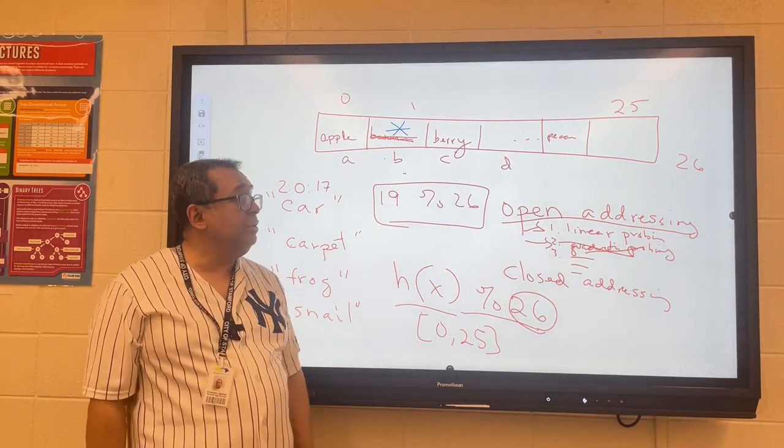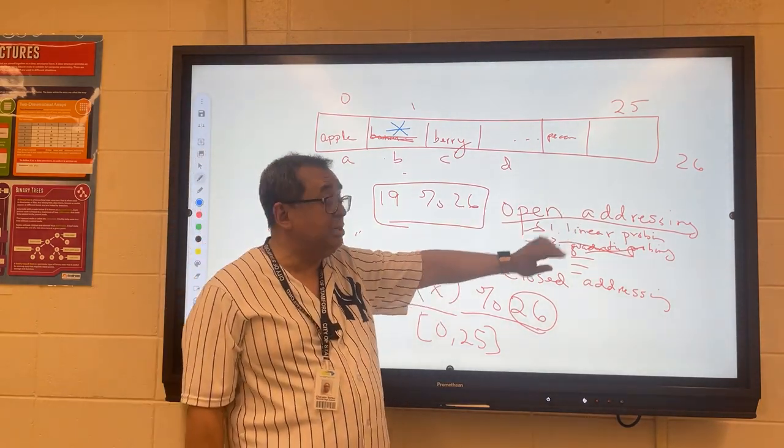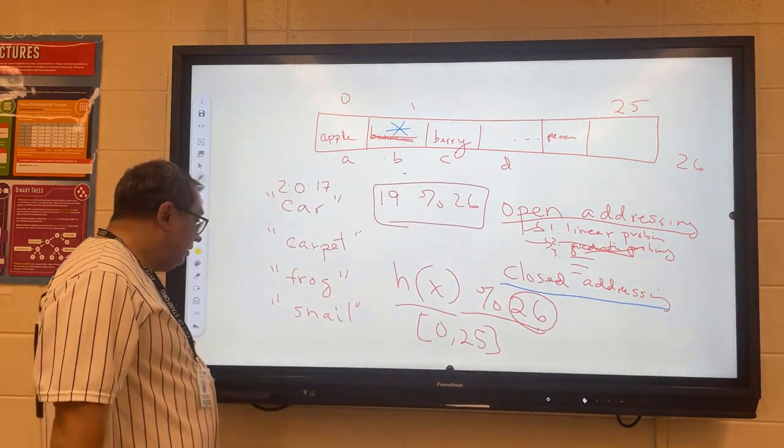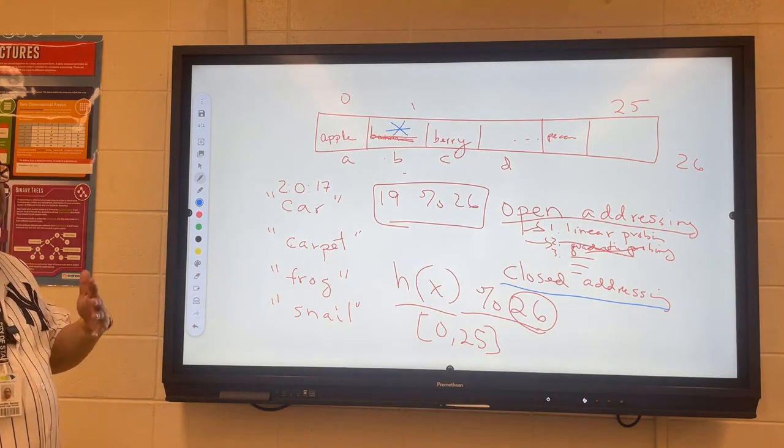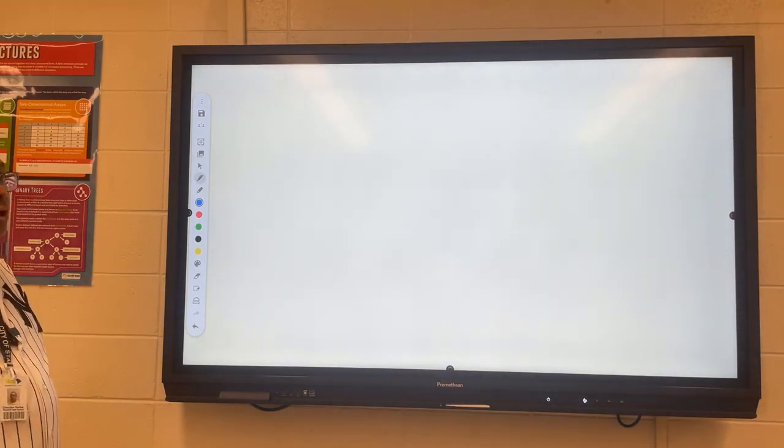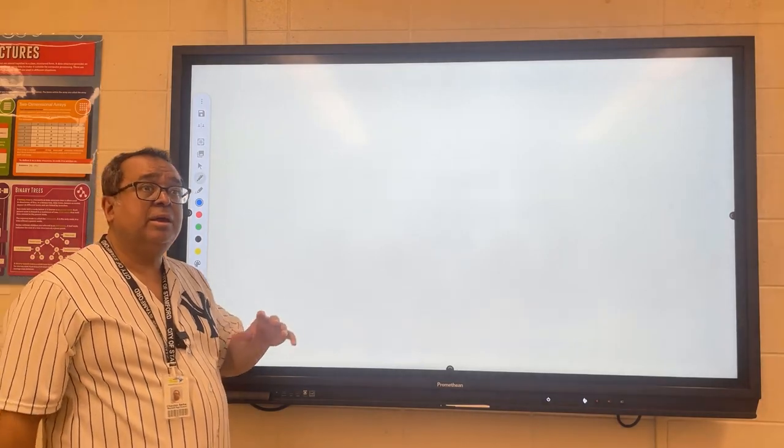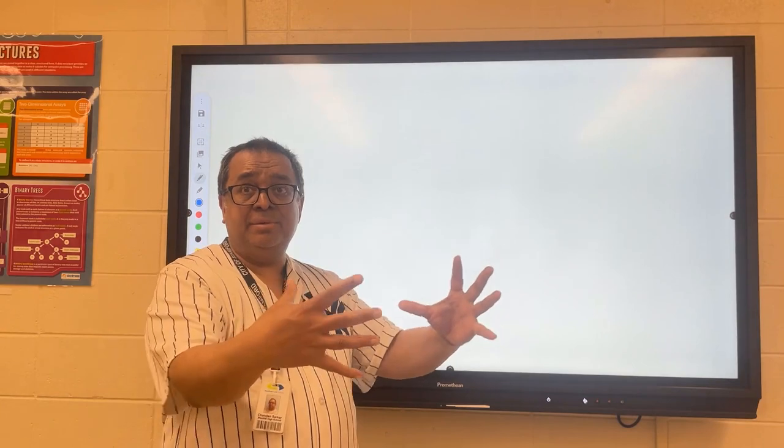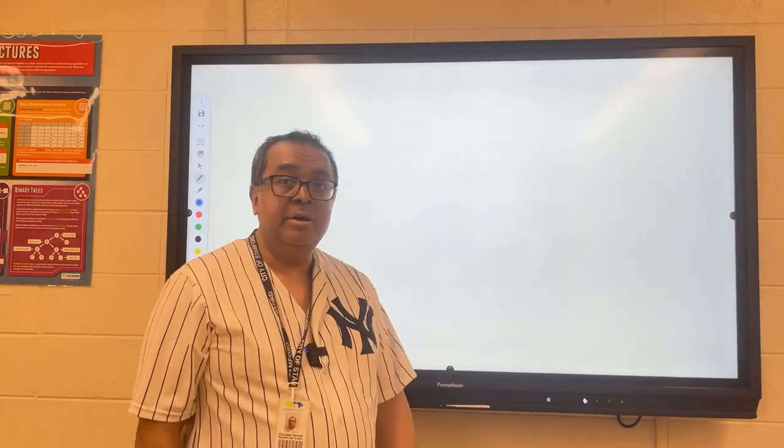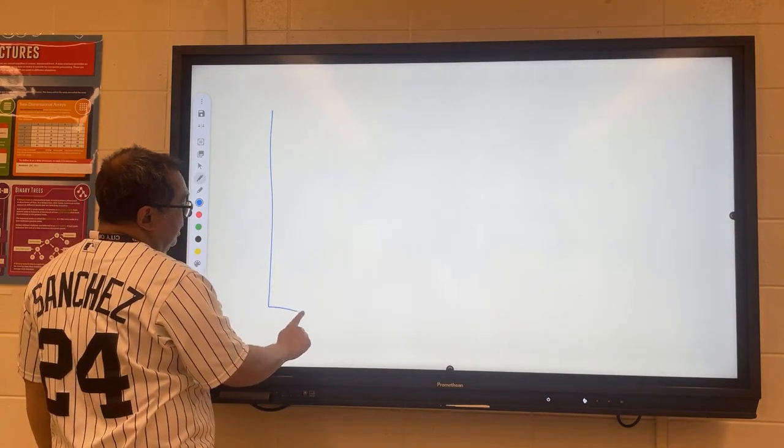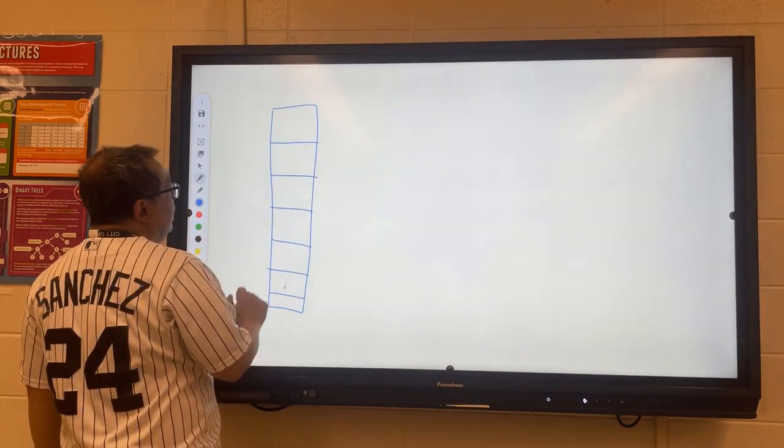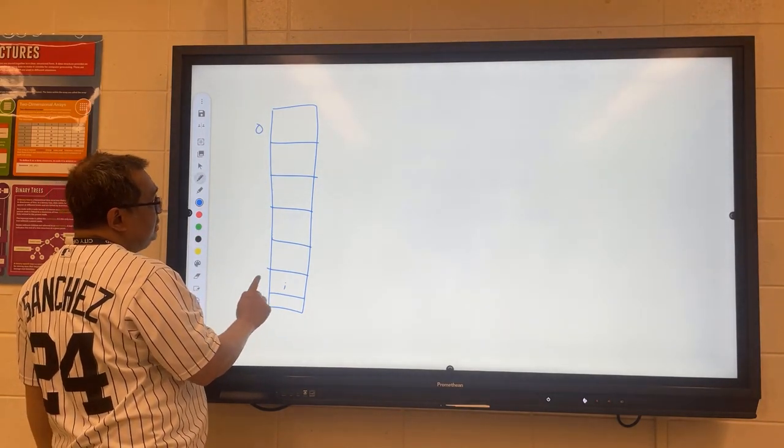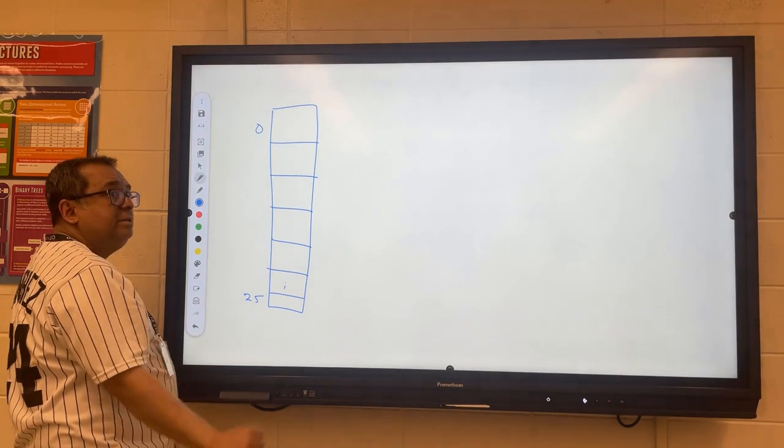So another technique that we can use to avoid all these complications is called closed addressing. And there we're going to do something that we've never done before in this class. We're going to take an array and a bunch of linked lists and put them together in a single data structure. So this is what we're going to do. I'm going to draw the array up and down this time, and I'm still going to say it's going to be 0 to 25, this is for A, B, C, whatever it is.